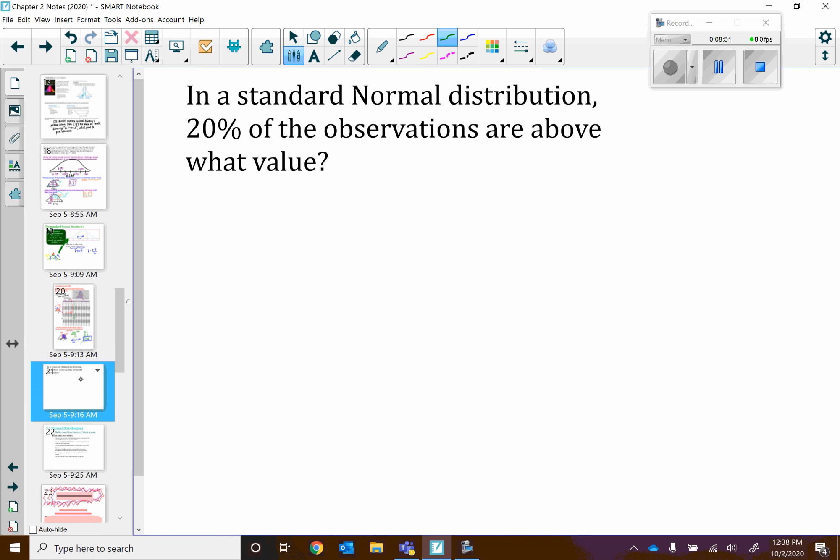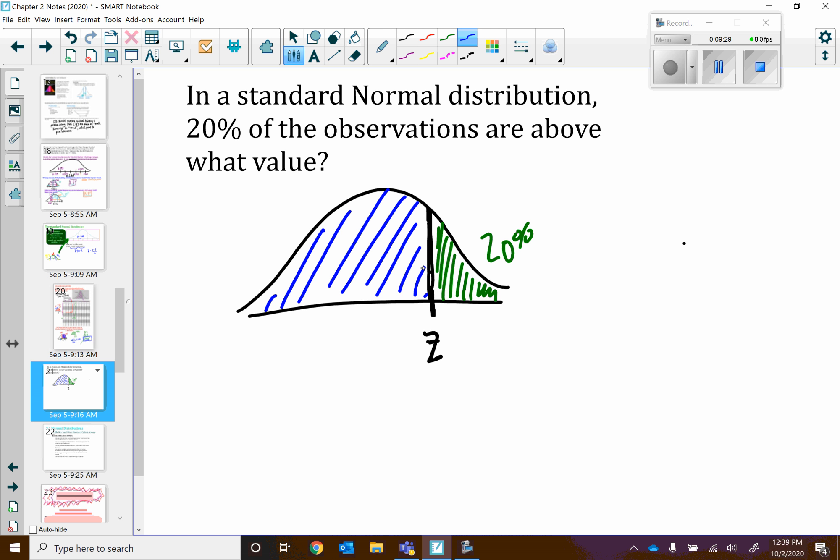Let's do one other type of problem, which is the following. In the standard normal distribution, 20% of the observations are above what value? So let's sketch this out. Here's our graph. We want to find a z-score that has 20% of values above it. So that this area right here is 20%. But I don't know what that value is. And table A only gives us the area to the left. So what are we going to do? Well, let's consider what is the area to the left. If there's 20% above, that means there's 80% below.